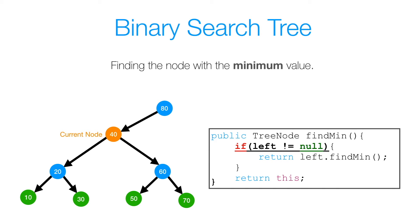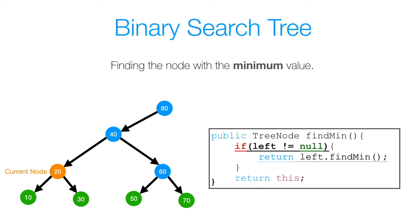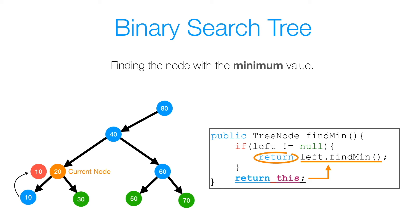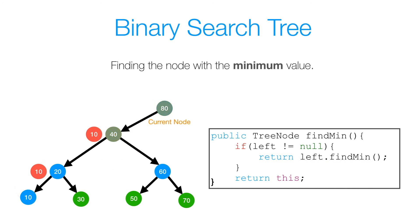Now we're back at the start of our findMin method, so we check again if our left is not equal to null. The left of 40 is not equal to null, so we'll call findMin on its left subtree. Again, we check if our left is not equal to null, and since it isn't, we call findMin on 20's left subtree. Again, we check — and this time our left is equal to null, so we return a copy of the reference to our node with value 10 back to the method that called it, which is left.findMin. That value is then returned back up the call chain until we finally get the copy of the reference to our node with value 10.